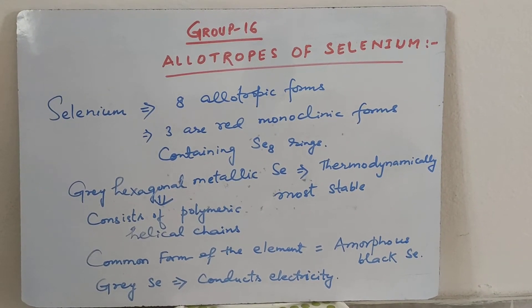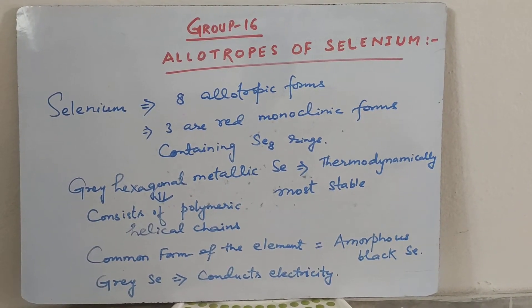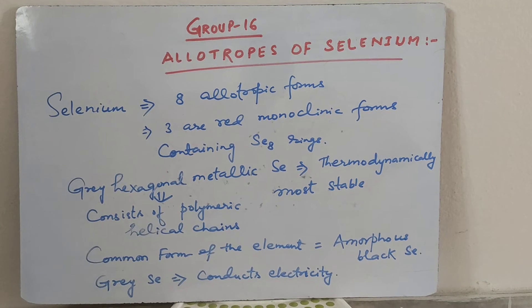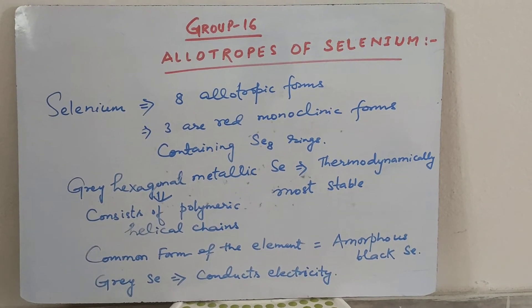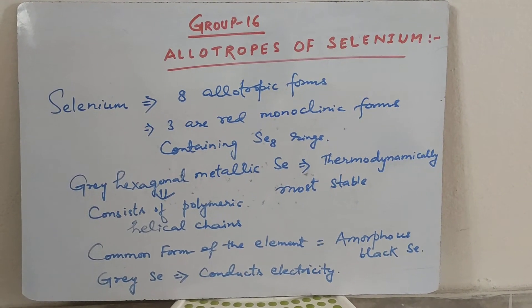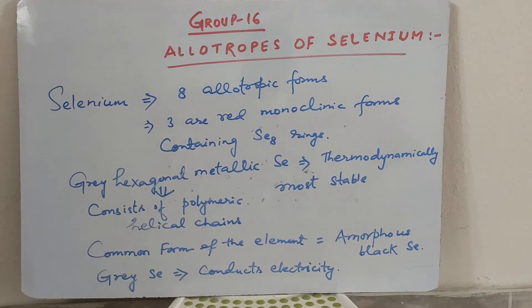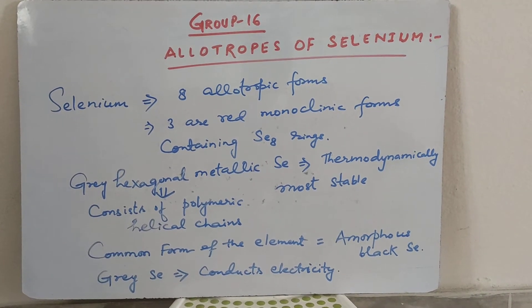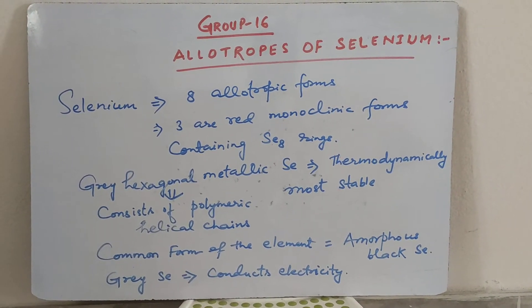Now we are going to discuss allotropes of selenium. First we should know what allotropes are. Allotropes are the existence of an element in more than one form. There are 8 allotropic forms of selenium.